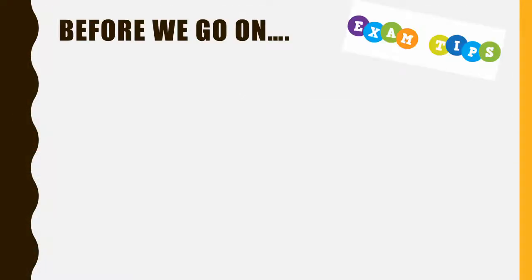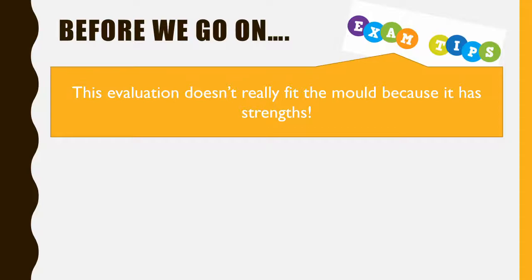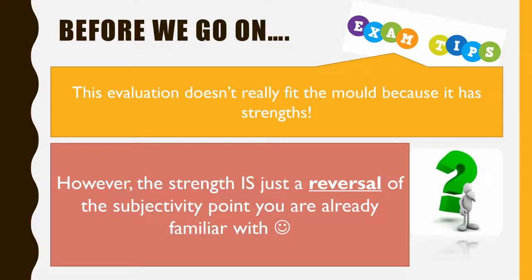Once we've got that done, we need to just have a quick stop and think about how this evaluation is going to be different to the other ones that we've done. This one doesn't really fit them all because it does actually have strengths. Before we look at those strengths, I do want to point out that the strength is only a reversal of the subjectivity point you've already done for the other definitions. So what is the opposite of subjectivity? Most of you will already know: objectivity. So this definition is going to be objective rather than subjective.